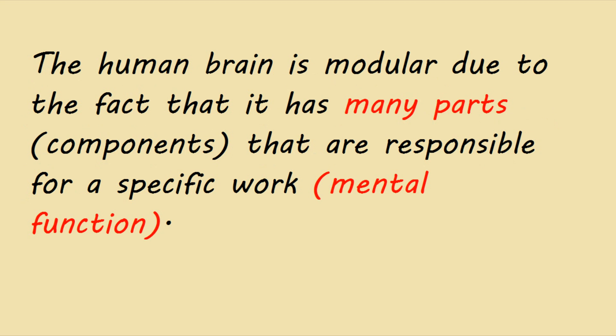The human brain is modular. When we say the human brain is modular, it is due to the fact that it has many parts or components, and these components are responsible for a specific function — more precisely, a mental function. So our brain isn't just one thing; it can be divided into many parts, and each part fulfills a mental function.